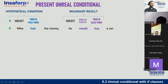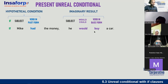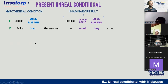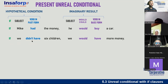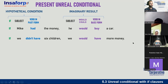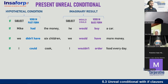Examples: 'If Mike had the money, he would buy a fast car.' Si Mike tuviera el dinero, se compraría un auto veloz — but he doesn't have the money. Imaginary situation. In negative form: 'If we didn't have six children, we would have more money.' Si no tuviéramos seis hijos, tendríamos más dinero. Another example: 'If I could cook, I wouldn't order food every day.' Si yo pudiera cocinar, no ordenaría comida todos los días — it's expensive.